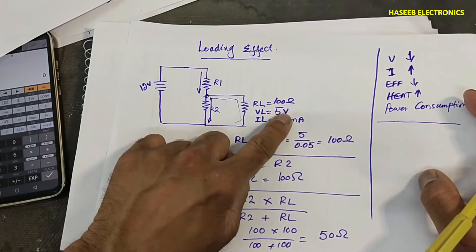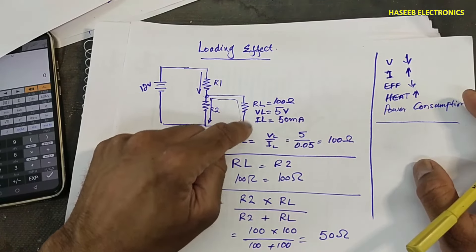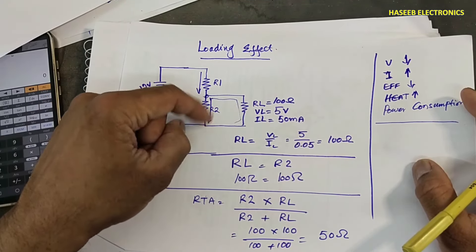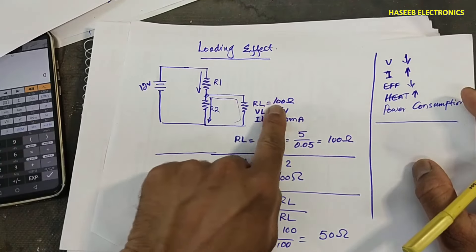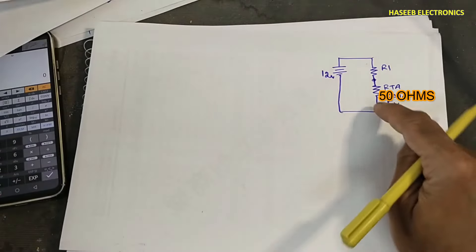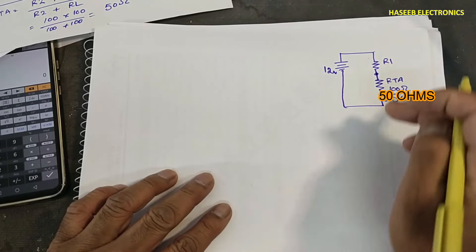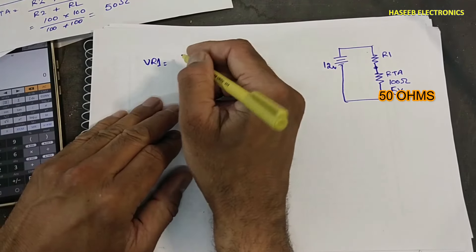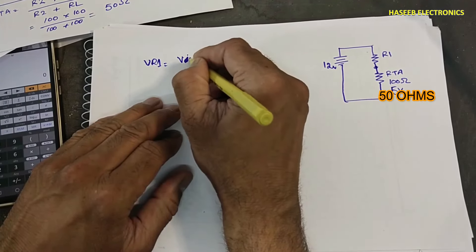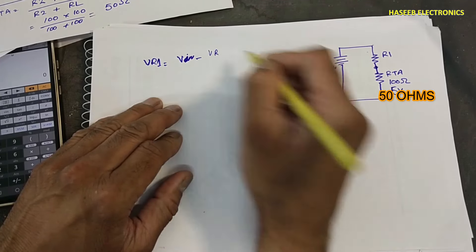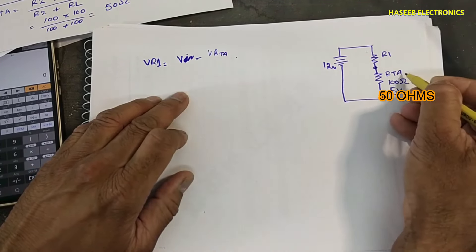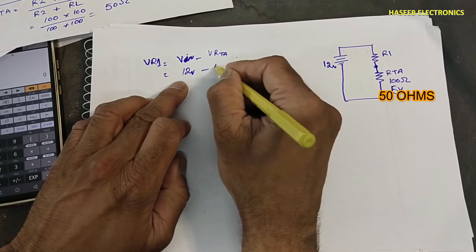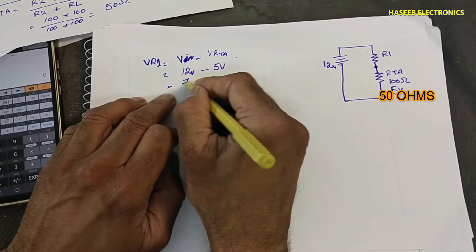Now the equivalent circuit has RTA of 50 ohms and R1 in series with 12 volts. Across RTA, 5 volts are dropped — as we assumed. The voltage remains the same in parallel: 5 volts across R2 and 5 volts across RL. So in this section, 5 volts are dropped, meaning VR1 equals V_in minus V_RTA equals 12 minus 5 equals 7 volts.